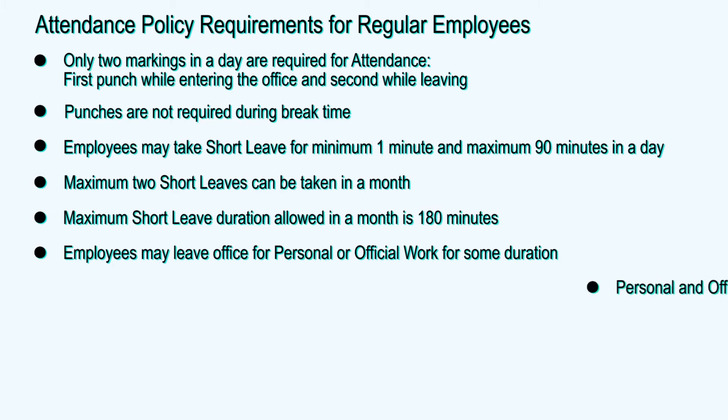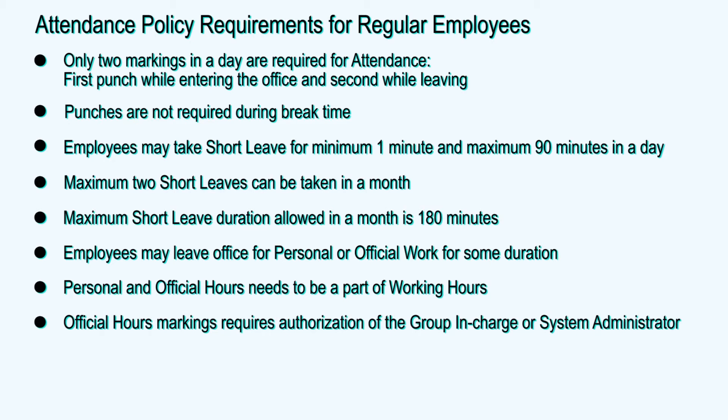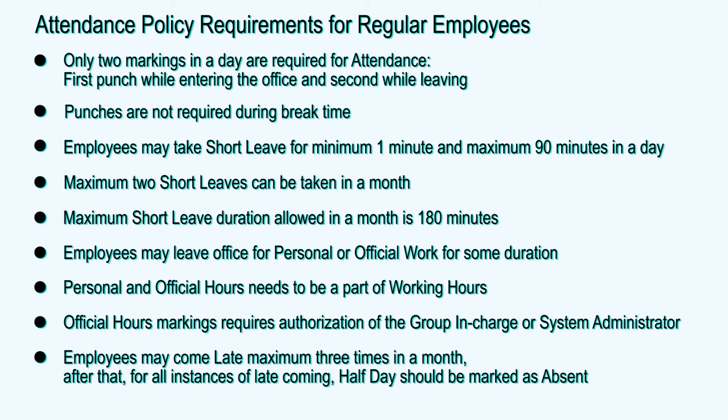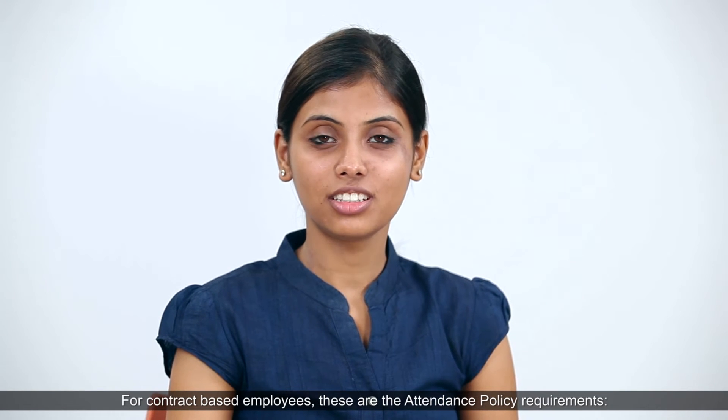Employees may leave the office for personal or official work for some duration. These personal and official hours need to be part of working hours. Official hours markings require authorization of the group in charge or system administrator. Employees may come late a maximum of three times in a month; after that, for all instances of late coming, half day should be marked as absent.